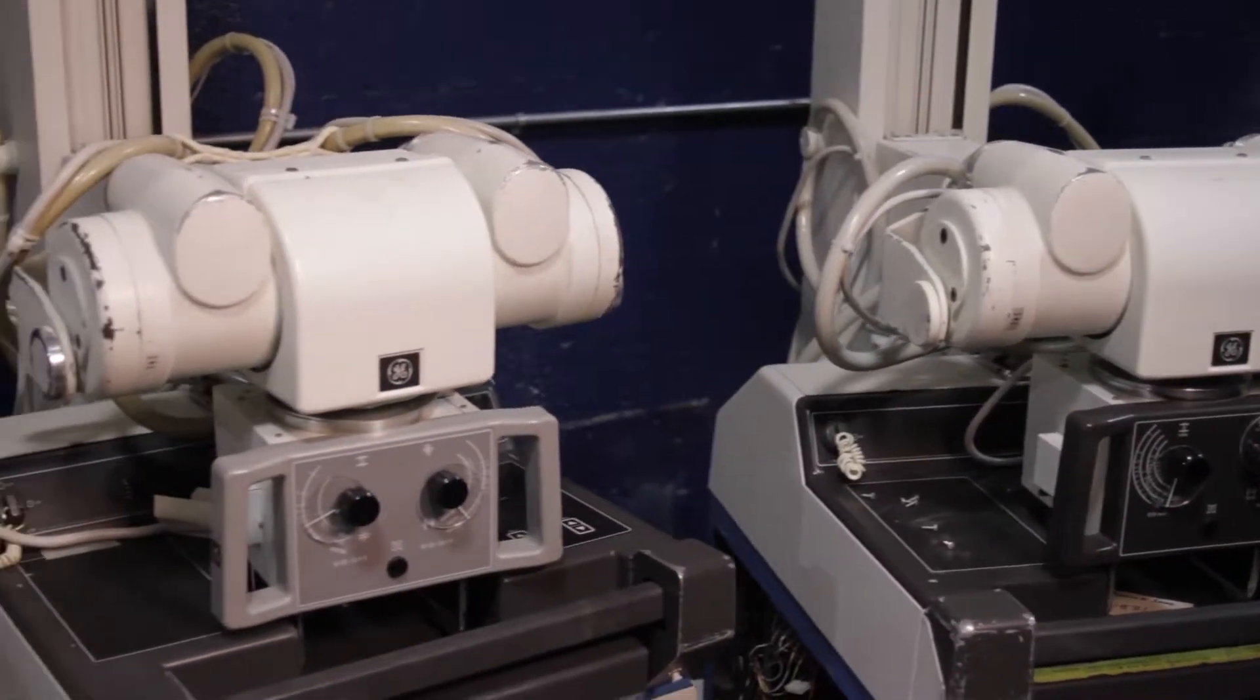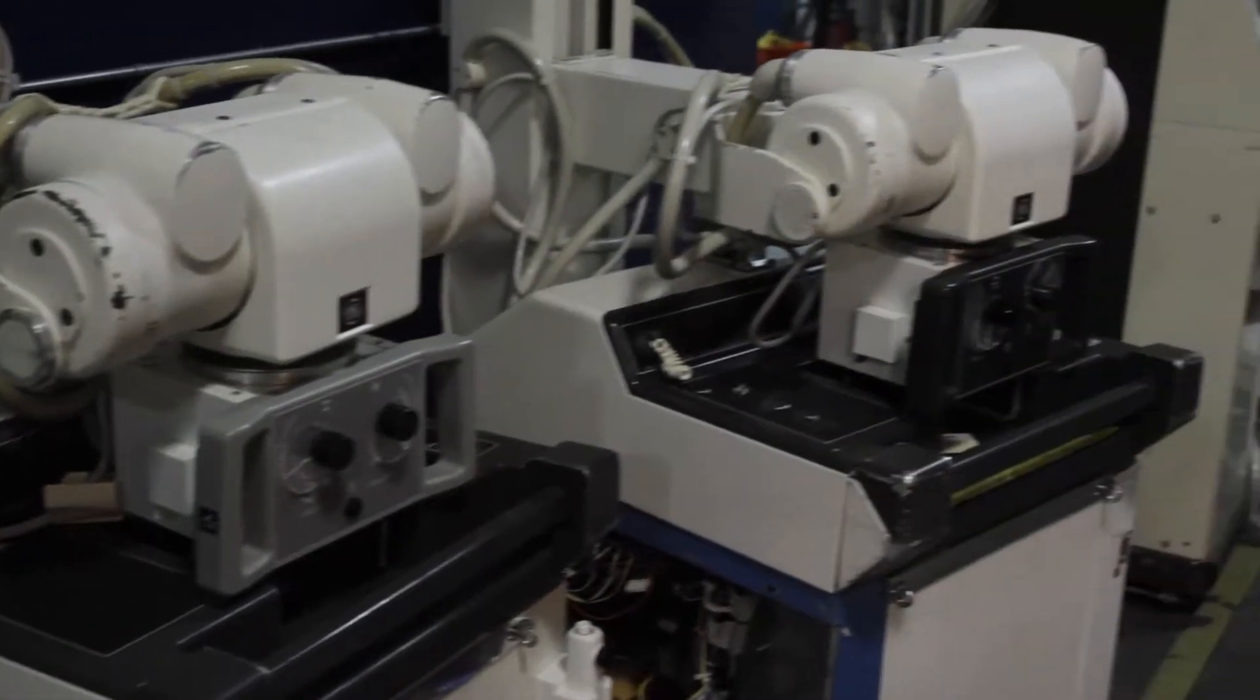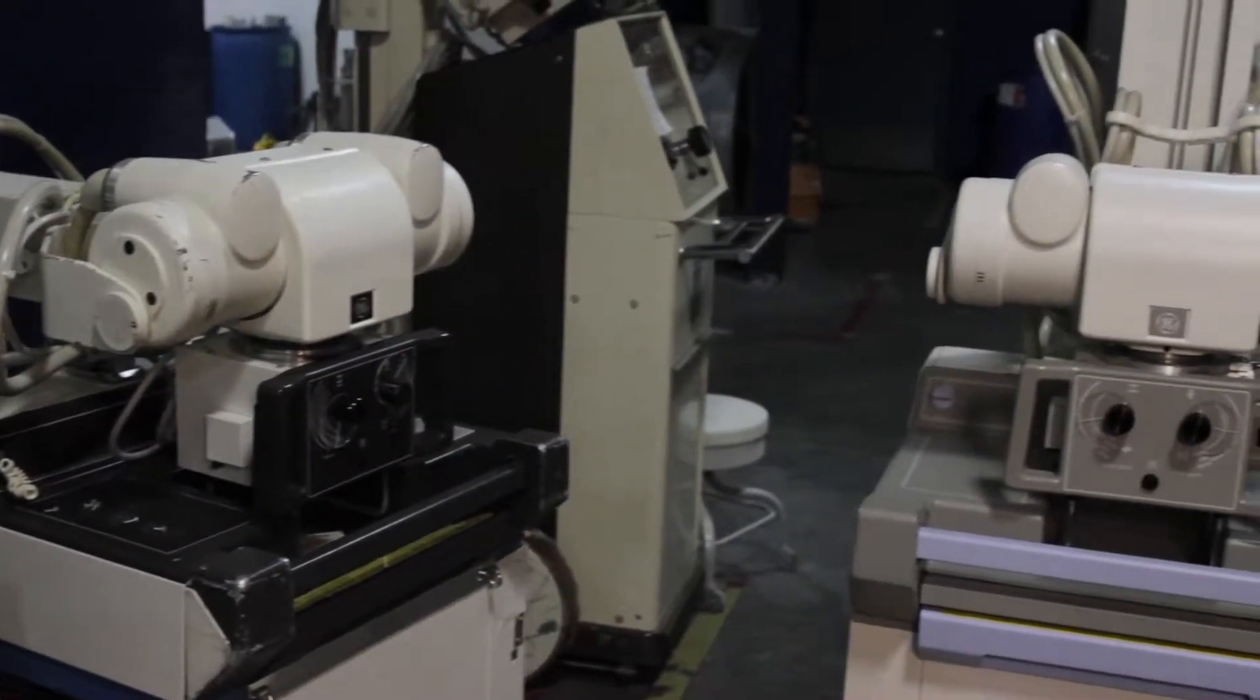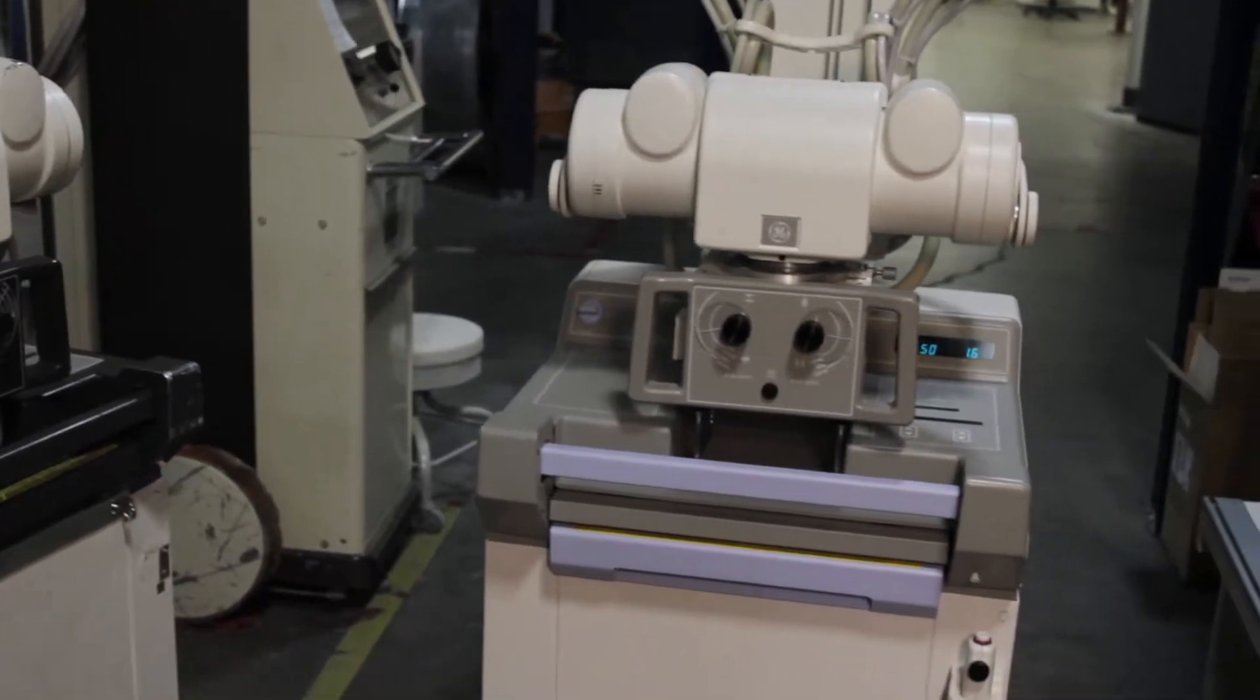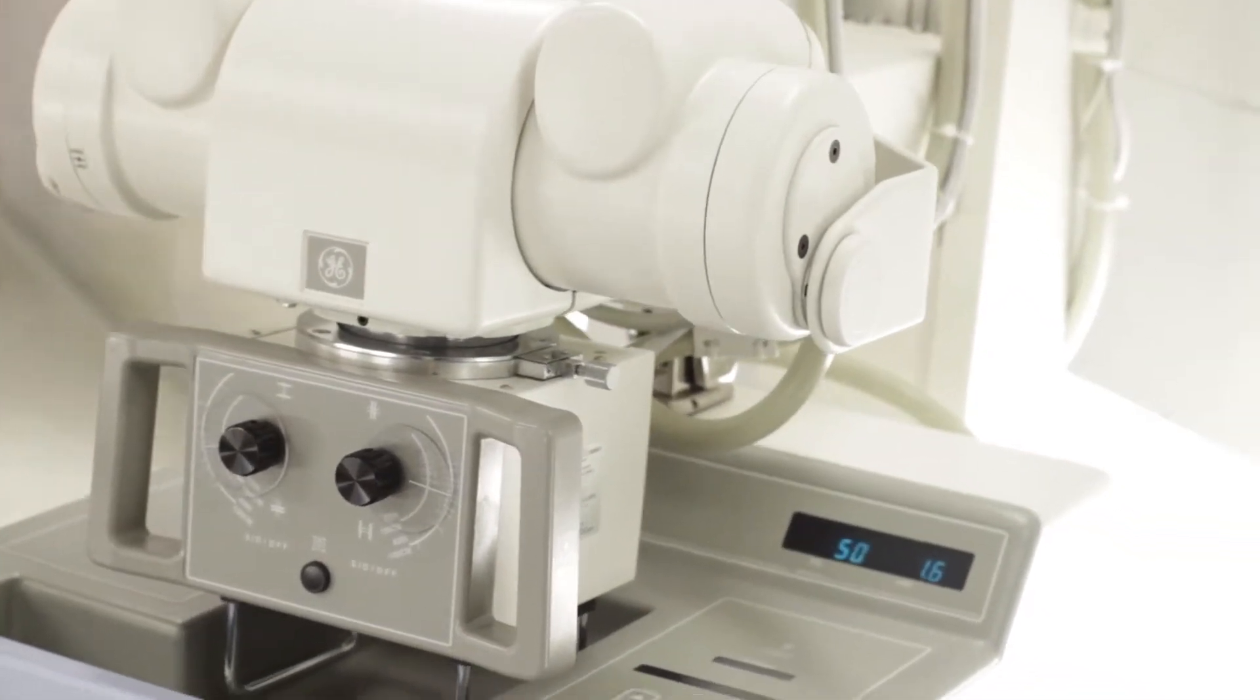This AMX4 is what many systems in the field look like after years of use. RADSource utilizes our disassembly, painting, testing, and reassembly process to bring the equipment to like new condition, both aesthetically and functionally. Here is how an AMX4 looks after being worked on.